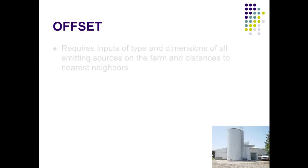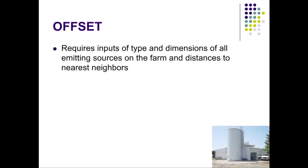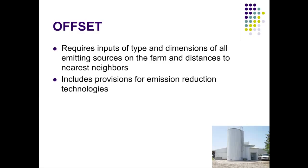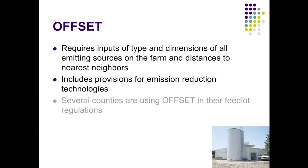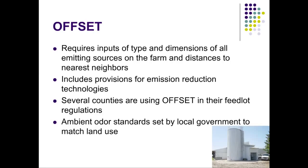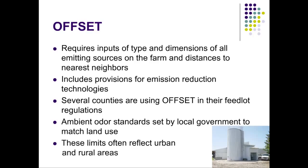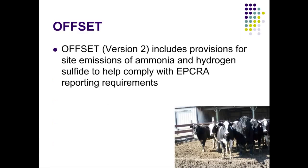To find the desired annoyance-free distance, Offset requires input of the type and size of all odor sources on the farm and any emission control technologies in use or proposed. Several counties in Minnesota have odor regulations that include Offset estimates. Regulations based on Offset or other available models require an established limit considered the best balance between farm and non-farm residents' right to quality of life and the ability to make a living, and these limits are often different in rural and urban locations. The latest version of Offset also includes hydrogen sulfide and ammonia emission estimates reported in pounds per day and tons per year, to help farmers determine compliance with Emergency Planning and Community Right to Know Act reporting requirements.